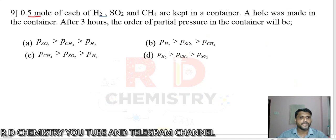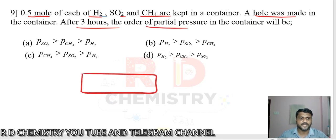Question number nine: 0.5 mole of each H2, SO2, and CH4 are there in the container. A hole is made in the container. After 3 hours, order the partial pressure. Suppose there is a vessel, in that vessel hydrogen, sulfur dioxide, and CH4 are there. Now there is a hole which will come. Through this hole the gas will come out. Which gas moves faster?